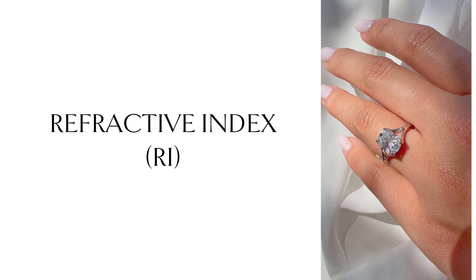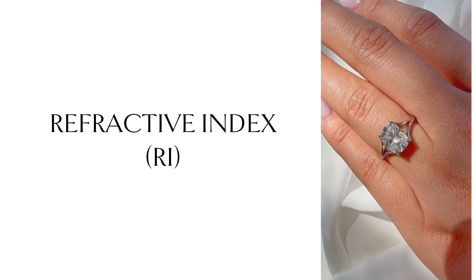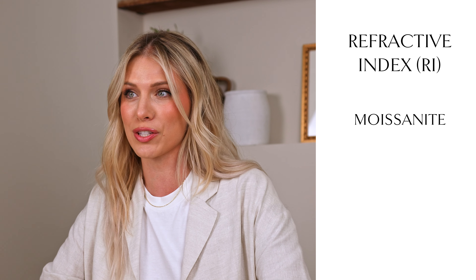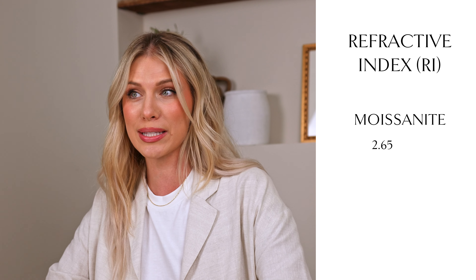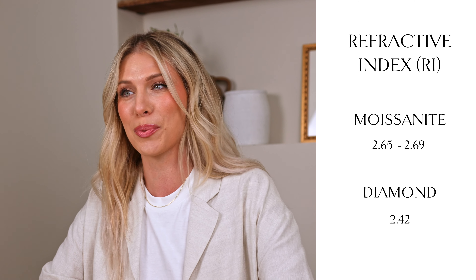Let's talk about brilliance. Brilliance is the amount of light that reflects off the stone. The RI, or the refractive index, is what affects the gemstone's brilliance or sparkle rating. Moissanites display more brilliance than any other stone, but diamonds aren't far behind. A moissanite's RI ranges from 2.65 to 2.69, and a diamond's RI is at 2.42.